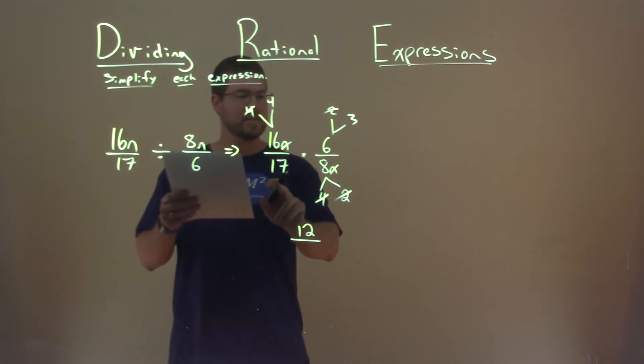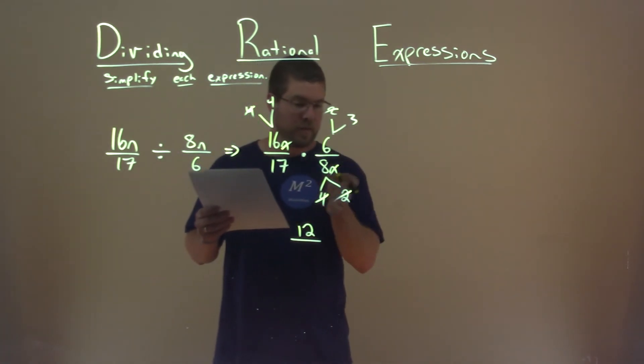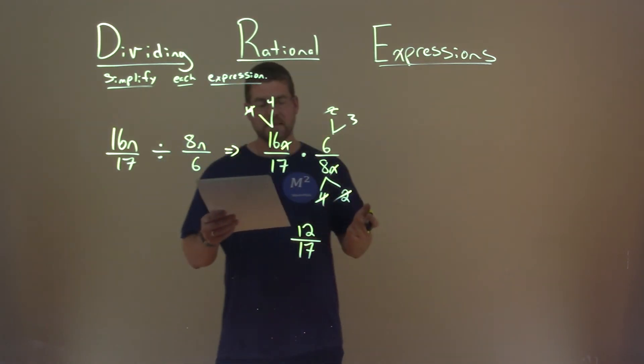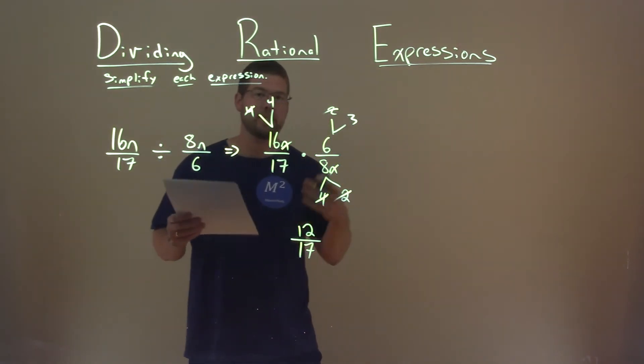The denominator, 17 times, well, nothing. Everything else got eliminated out. So it was just 17. And that's it. 12 over 17 is our final answer.